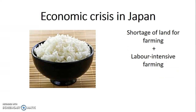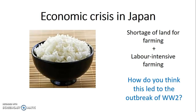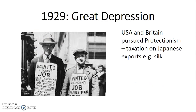Likewise, there was a shortage of land for farming, a shortage of rice, and labor-intensive farming. At this point Japan was still using labor-intensive farming and was not able to catch up to the need to produce food at a faster rate, given the high increase in population. This too supports the idea that the economic crisis pushed Japan toward an expansionist policy.